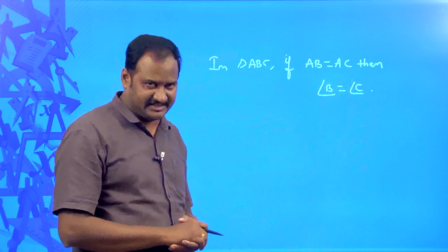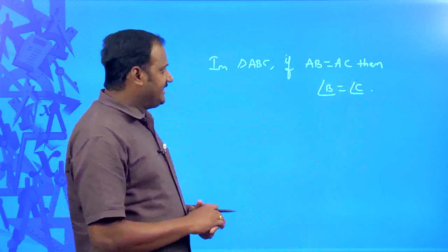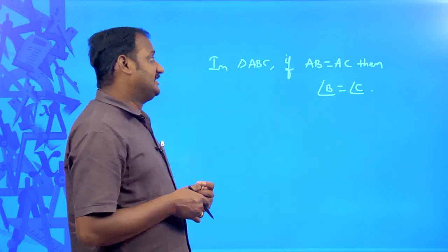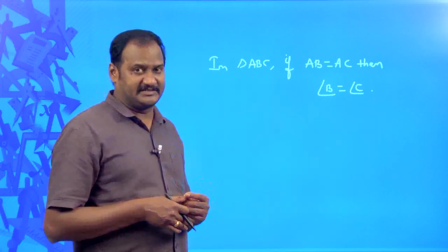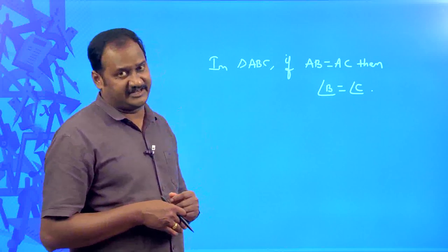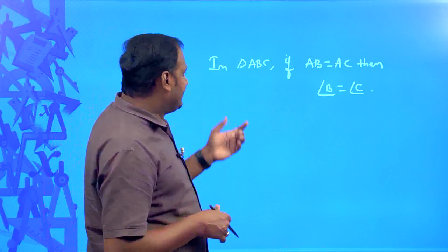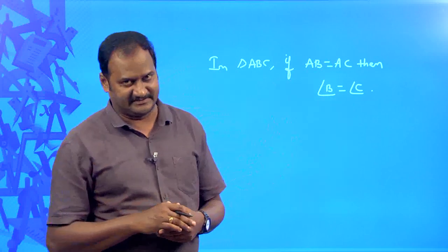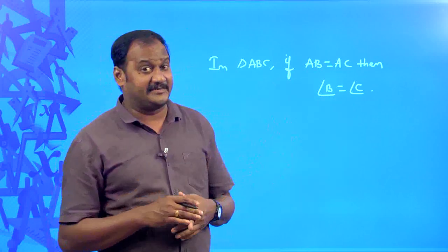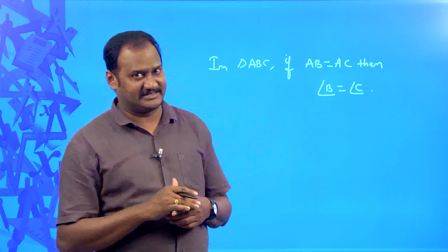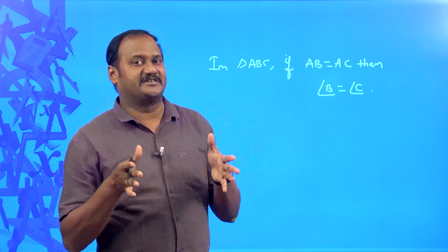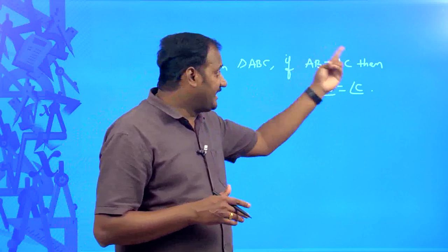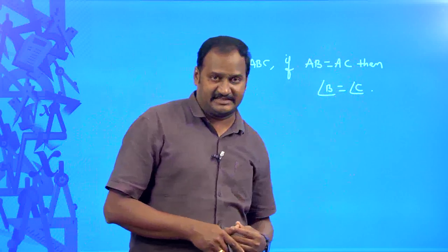This is a mathematical compound statement because it is a combination of two simple statements. The first simple statement is: in triangle ABC, AB is equal to AC. That simple statement is said to be the hypothesis, because that is the information given. Then what you are going to prove is angle B equal to angle C.